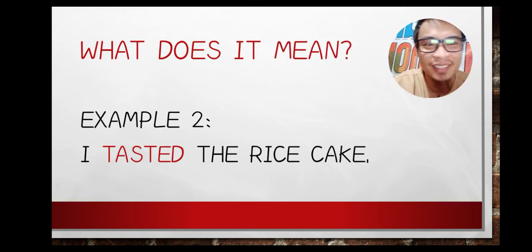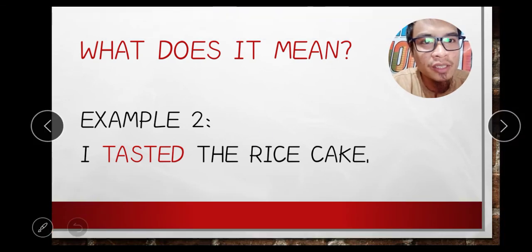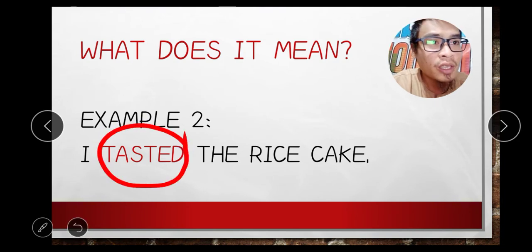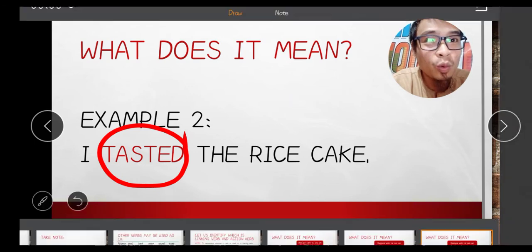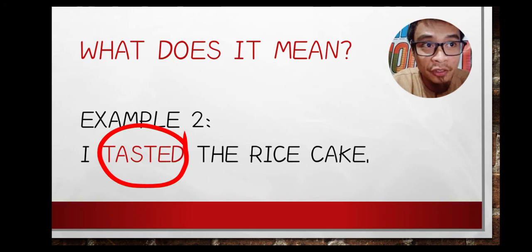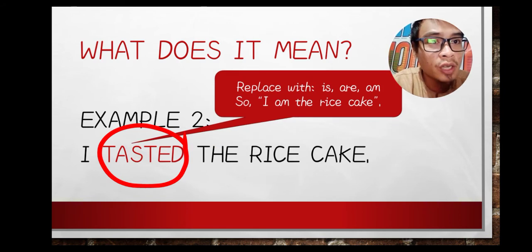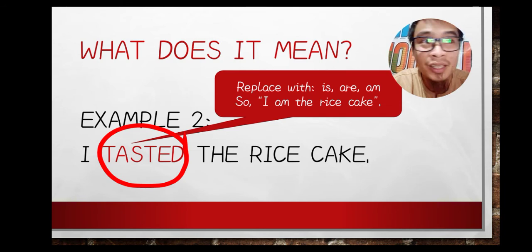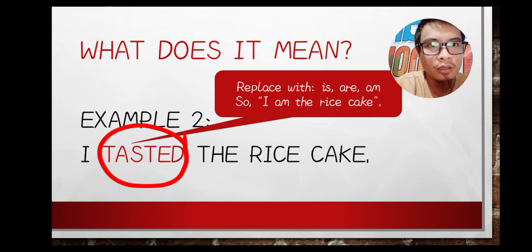Example number three: 'I tasted the rice cake.' The verb is again 'tasted.' We replace it with a be-verb. Since the subject is 'I,' we use 'am.' The sentence becomes: 'I am the rice cake.'